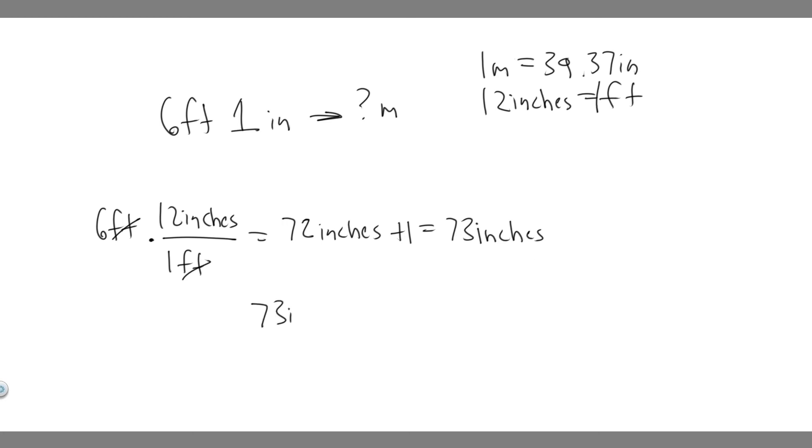So 73 inches, we know that there is going to be 39.37 inches for every single 1 meter. So we write it on the bottom because the inch is on top. And so they're going to cancel. And essentially what you're going to do is just do 73 divided by 39.37.